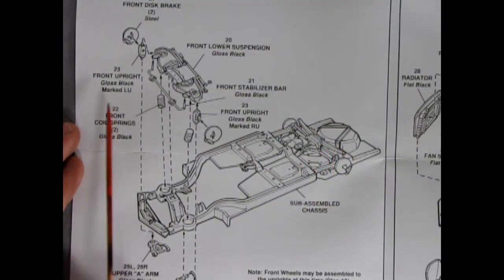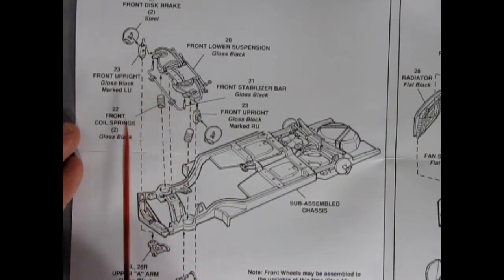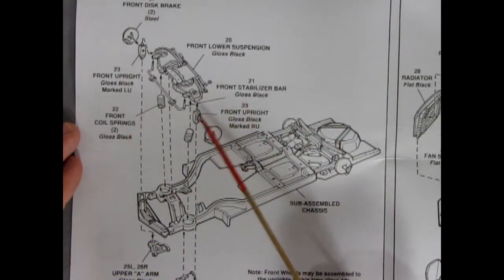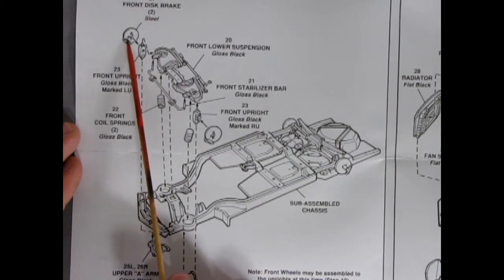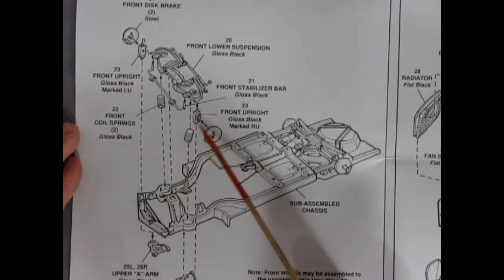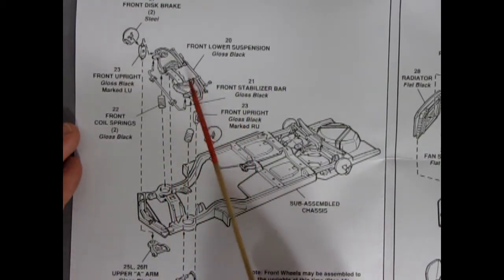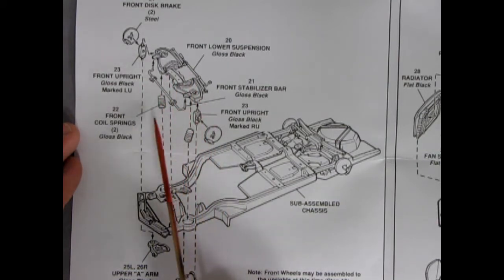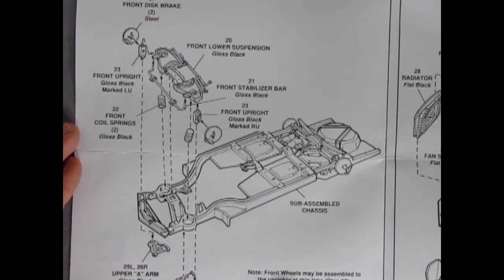Now moving on to the front of the car we have quite an intricate front end assembly. You might even be able to make this poseable if you know how. So going on to our sub-assembled chassis here we have the front disc brakes, our front uprights, which are our kingpins of course. And then here we've got our lower suspension, a stabilizer bar, our coil front springs, and our upper A-arms. And it says here note front wheels may be assembled to the uprights at this time. See step 10.